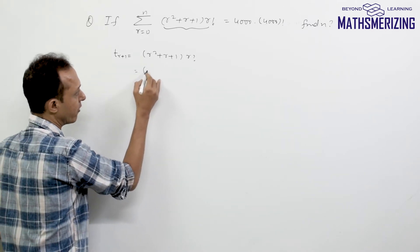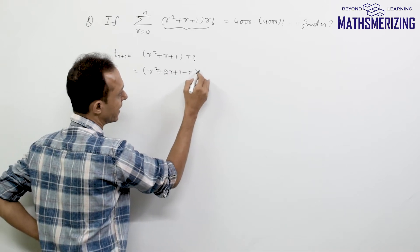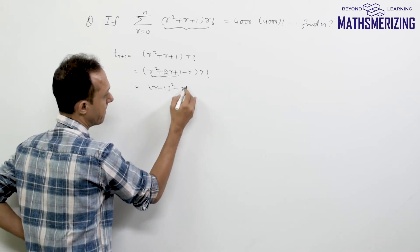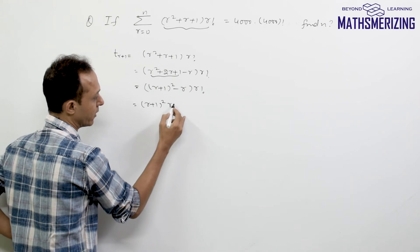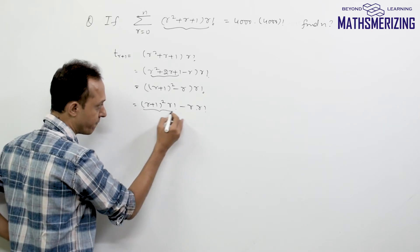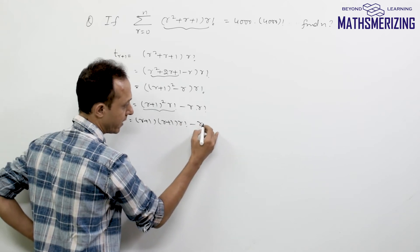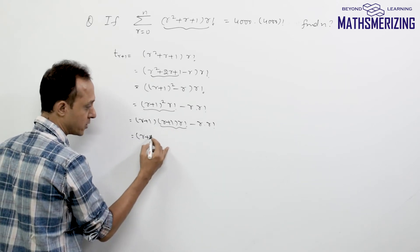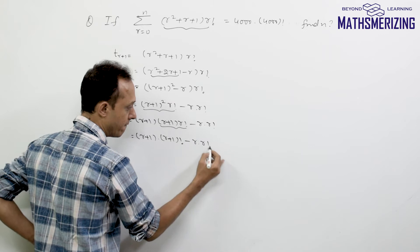Now I can rewrite r² + 2r + 1 − r, which is (r+1)² − r, multiplied by r!. So I'll write it as (r+1)² · r! − r · r!. Now (r+1)² · r! = (r+1) · (r+1) · r!, and (r+1) · r! is simply (r+1)!. So this becomes (r+1) · (r+1)! − r · r!.